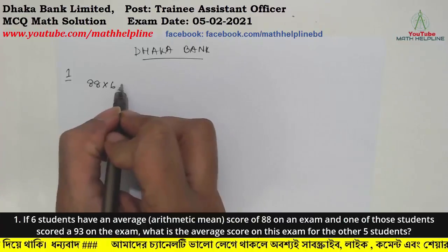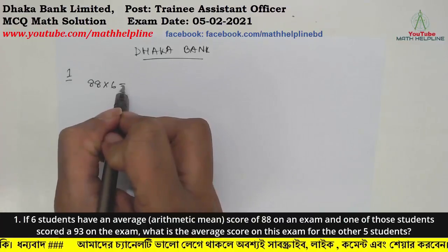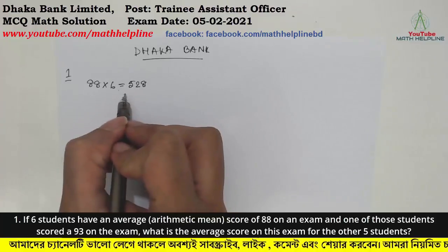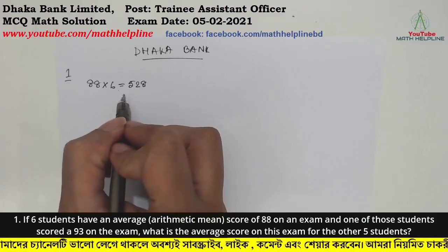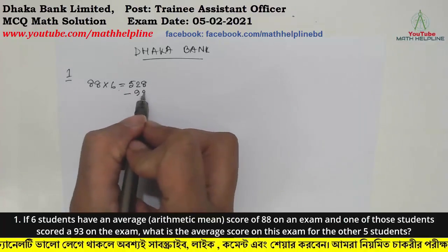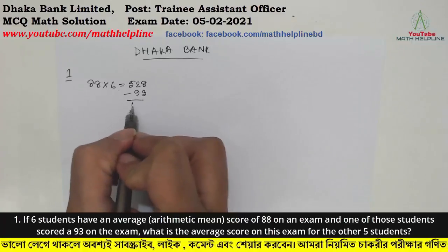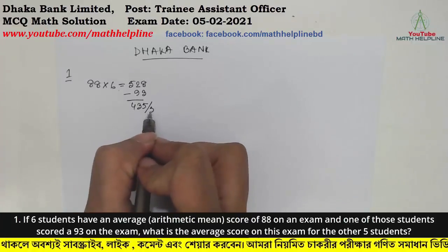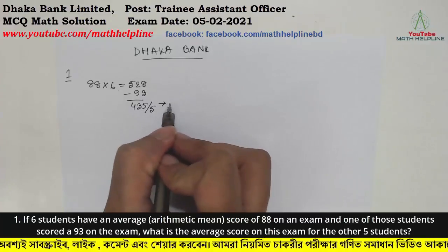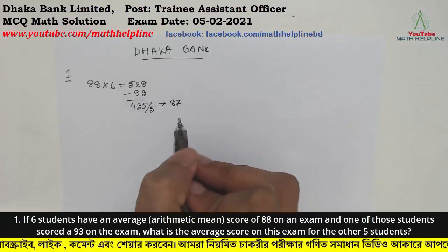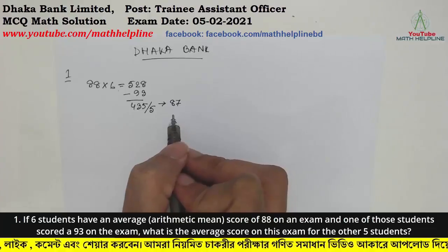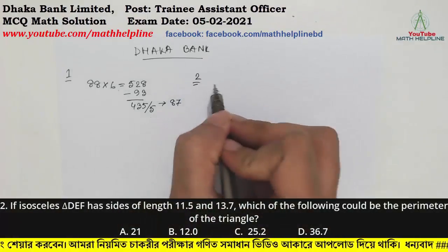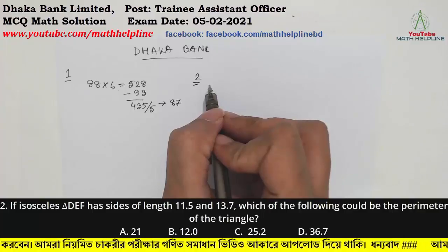Six into 88 equals 528, that is the total class result. Total marks minus 93 equals 435. 435 divided by 5 equals 87. So the average for the other five students is 87.